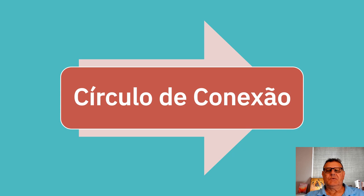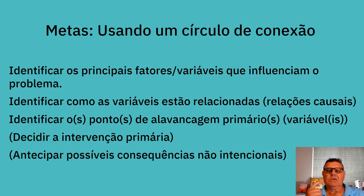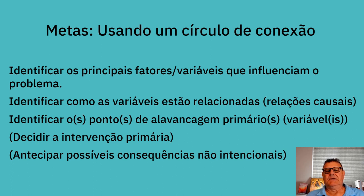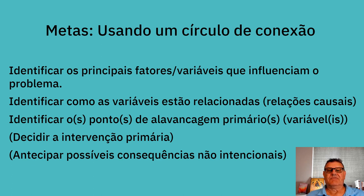In your church system, all you need to understand is what the system is, what the relationships are, and you can find a high leverage intervention that will make the change for relatively little effort and relatively little cost. To do this, we need to understand the connection circle. The goals of using the connection circle are: identify the key factors or variables influencing the problem, identify how those variables are related — the causal relationships — and then identify a primary leverage point. From that we can decide our primary intervention and anticipate potential unintended consequences.